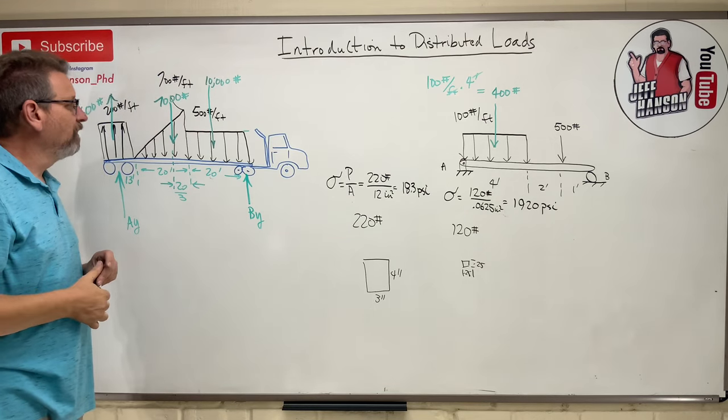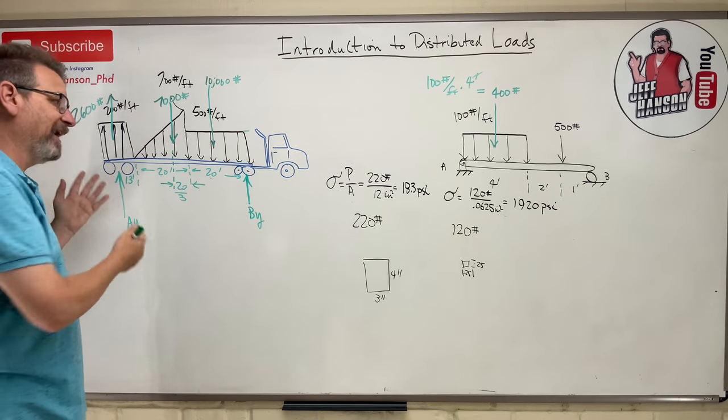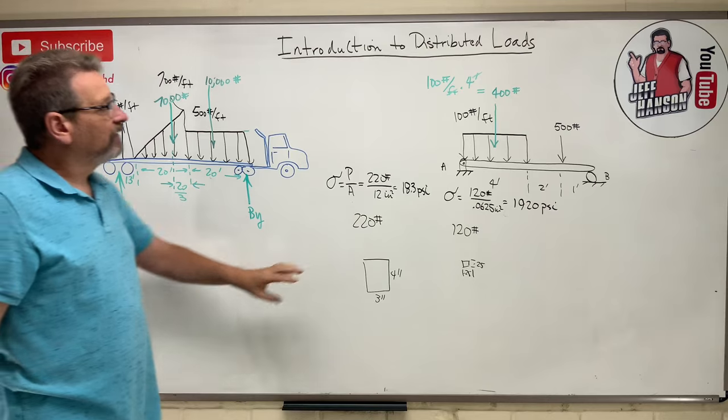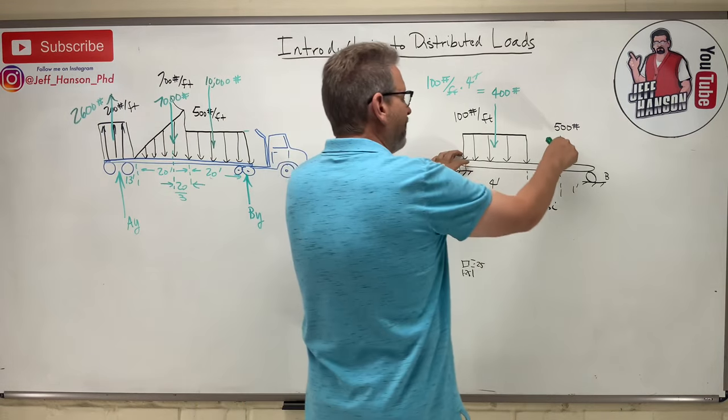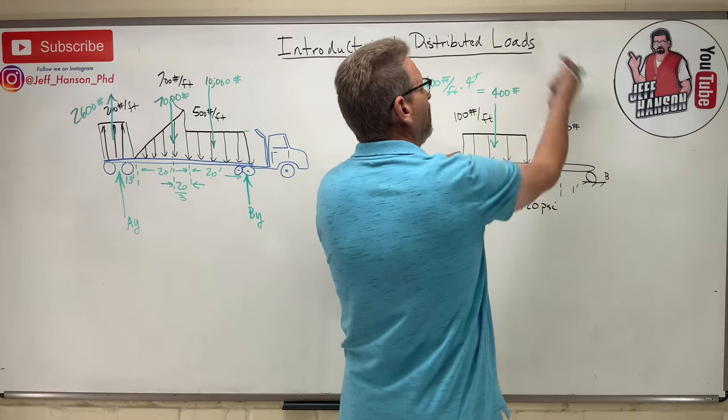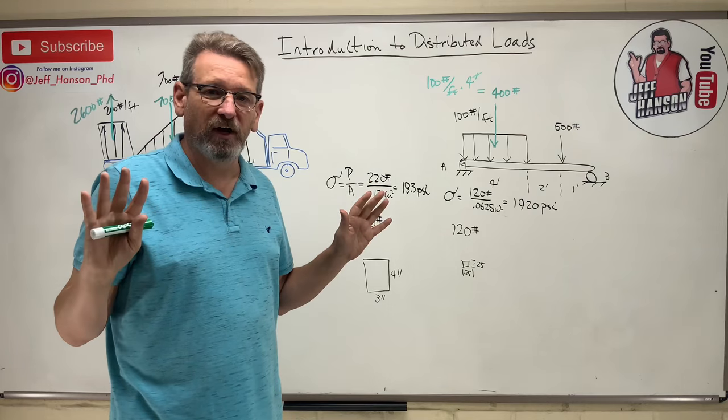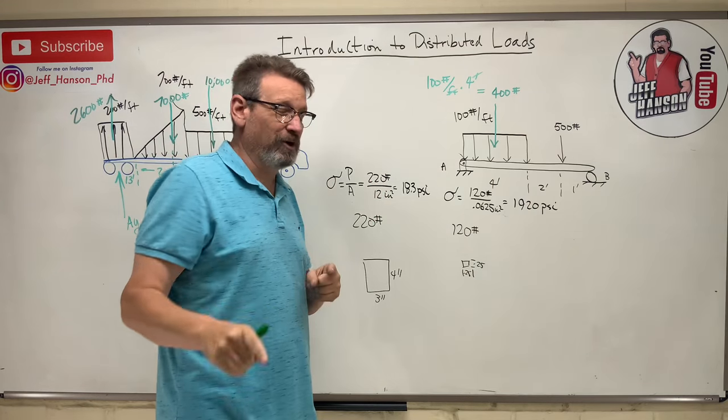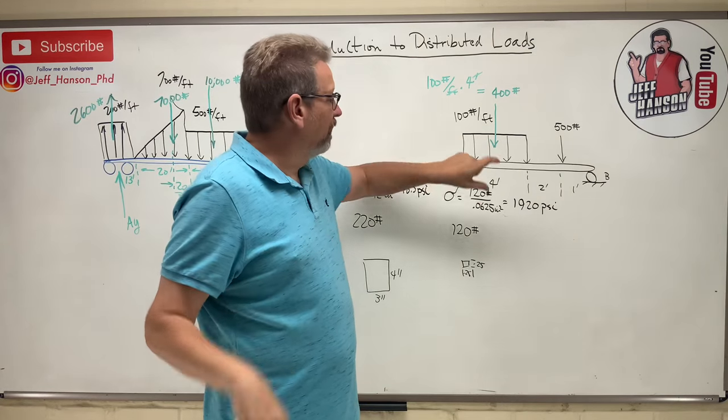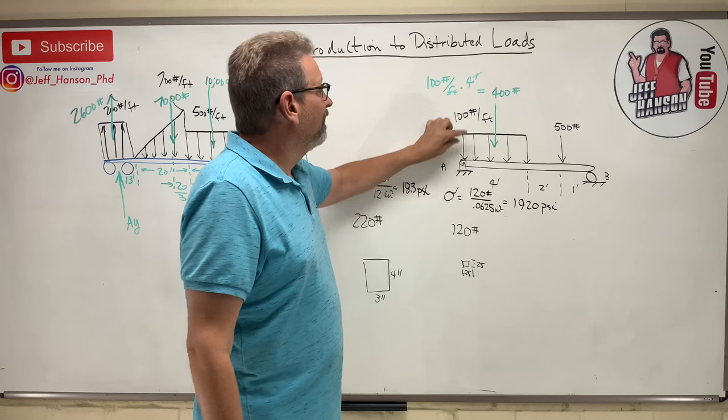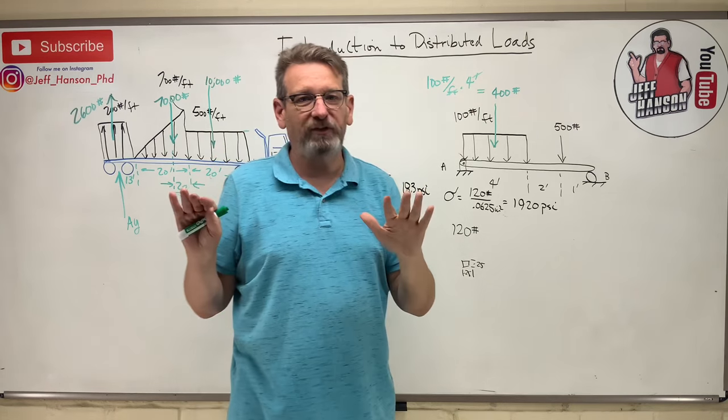And so now, now I've got three concentrated loads where I used to have distributed loads. I can solve that like a regular old statics problem, right? Take the moment at A and I got 400 times two, rotating me negative. I got 500 times six, rotating me negative, plus BY times seven, rotating me positive, and just solve it like every problem we've done. So distributed load problems should be really easy for you if you know what a centroid is, because all you got to do is calculate the area of this shape, 100 times four, right? Apply that load at the centroid of that shape, and then just work it like a regular old statics problem.